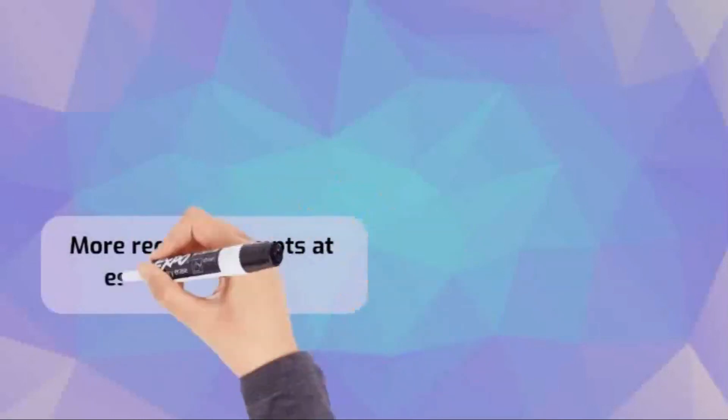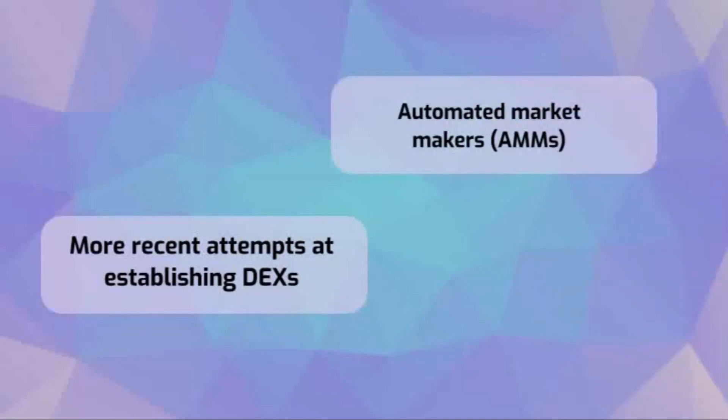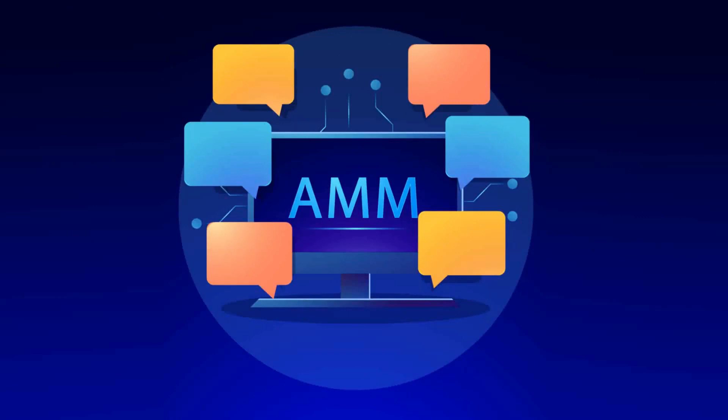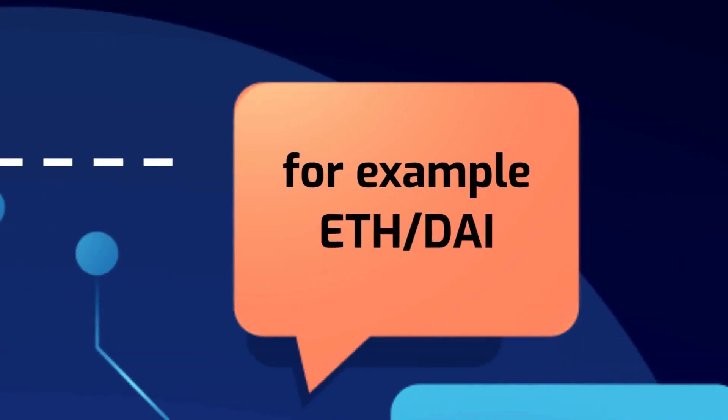Instead of using an order book, more recent attempts at establishing DEXs have revolved around the use of automated market makers, which is what this video focuses on. An automated market maker works similarly to an order book exchange in that there are trading pairs, for example Ethereum and DAI.